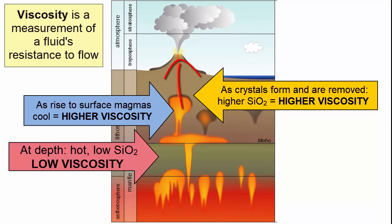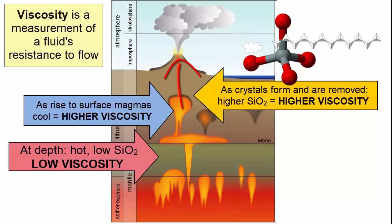Why? The higher the SiO2 content in a magma, the more silicon-oxygen tetrahedra, which, as we know from the Inside Minerals video tutorial, when found in high abundance will attract each other and start bonding together in chains. This bonding will happen even in the liquid phase, and linked tetrahedra will make a magma more resistant to flow.